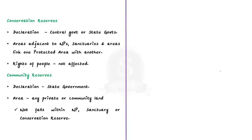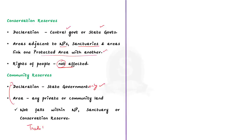Conservation reserves can be declared either by the central government or the state governments. They are particularly areas located adjacent to national parks, wildlife sanctuaries, and those areas which link one protected area with another. By declaring an area as a conservation reserve, the rights of the people living inside such protected areas are not affected. Finally, community reserves can be declared by the state government. If an individual or a community has volunteered to conserve wildlife under its habitat, then any private or community land not comprised within a national park, sanctuary or conservation reserve can be declared as a community reserve. Note that sanctuaries, national parks and conservation reserves can be declared both by the central and state government, but community reserves can only be declared by the state government.